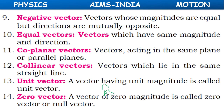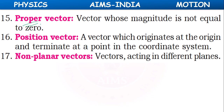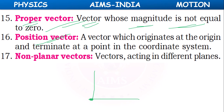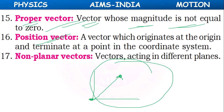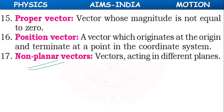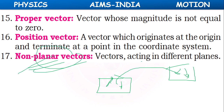A unit vector is represented by a cap symbol and has a magnitude of 1 unit. A zero vector (or null vector) has zero magnitude but some direction. A proper vector has a non-zero magnitude. A position vector originates from the origin and terminates at some point in the coordinate system, indicating the position of that point. Non-planar vectors act in different planes.